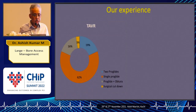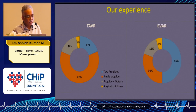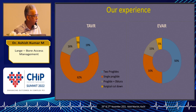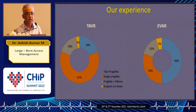Comparing our experience with TAVI and EVAR: close to two-thirds of cases we end up using only one ProGlide and nothing else for TAVI procedures. Whereas for endovascular procedures, at least half the time we end up using two ProGlides, especially on the side where the larger access is required.